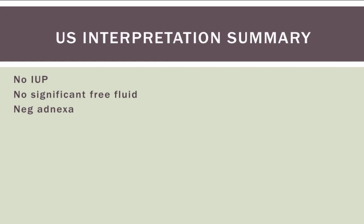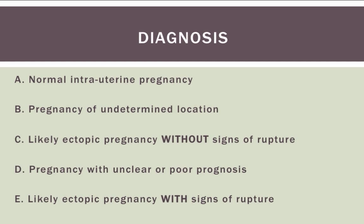The HCG is 2324, so we saw no intrauterine pregnancy, and our HCG is above the so-called discriminatory zone, although I'd like to get rid of that term. The interpretation of our ultrasound: no intrauterine pregnancy, no significant free fluid, and nothing in the adnexa. What's our diagnosis here?